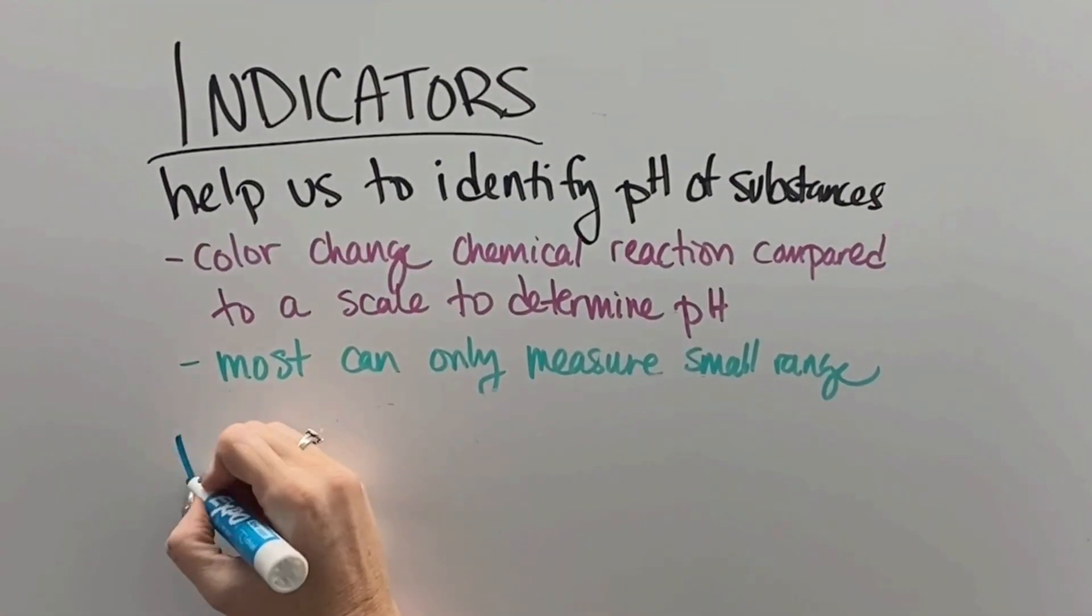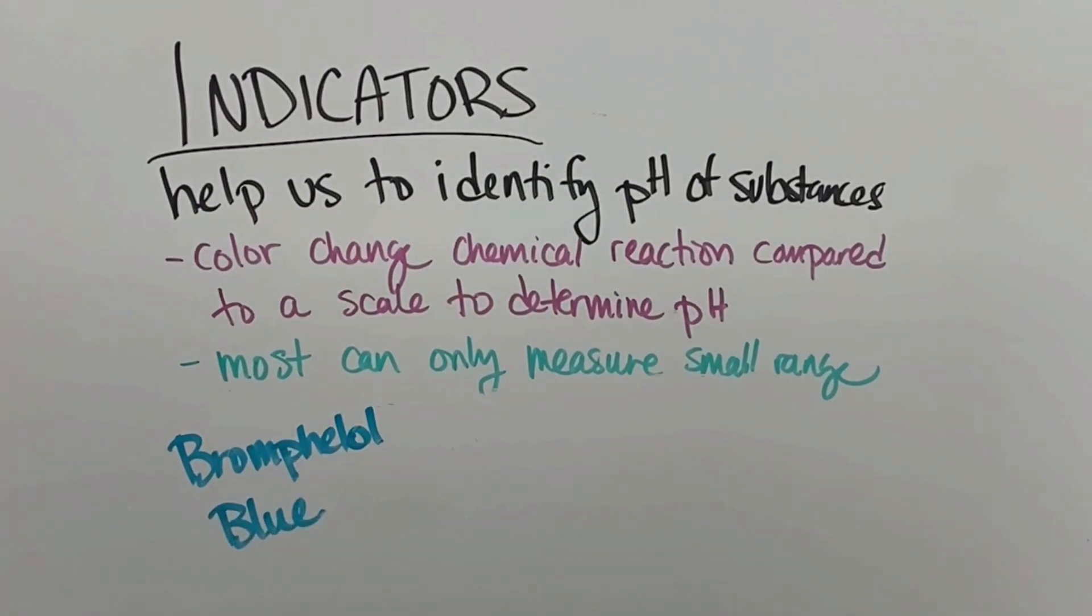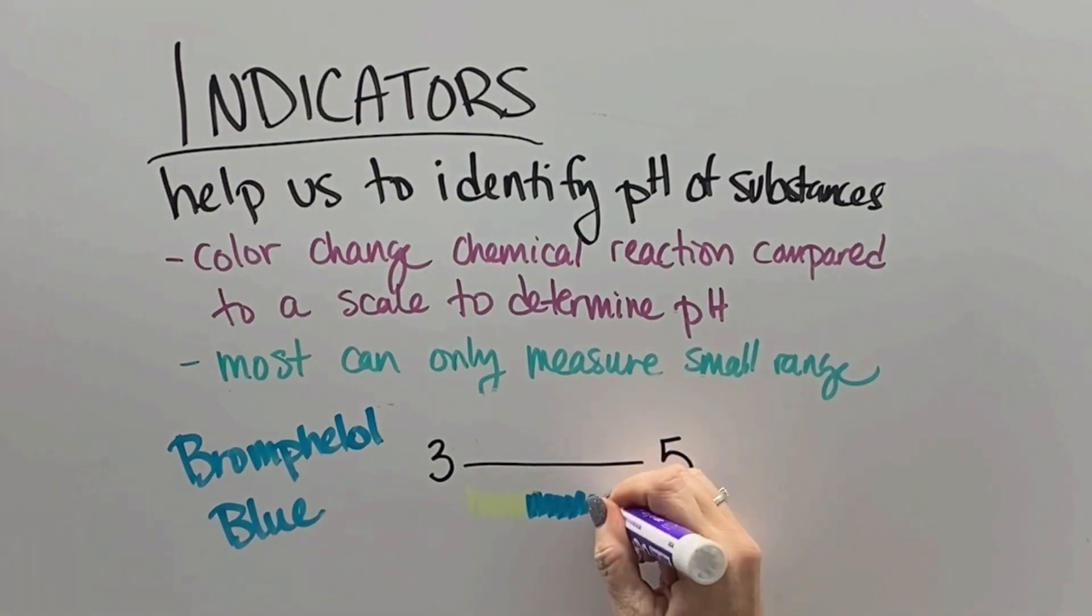So if we were to get one of those readings, we would go to a different chemical to get a better idea. Bromophenyl blue tells us 3 to 5. And so again, we could see from yellow to kind of a dark violet whether something was in that range. But if it was super yellow or super purple, we would have to get a different indicator.